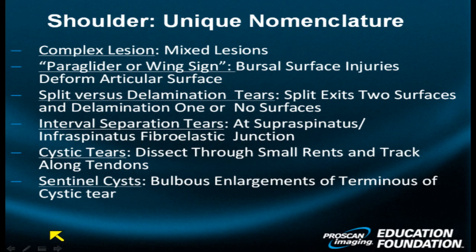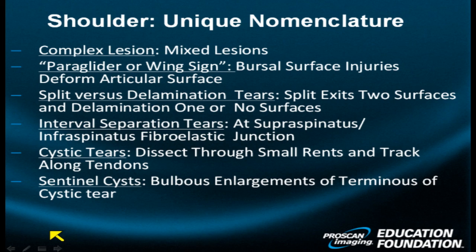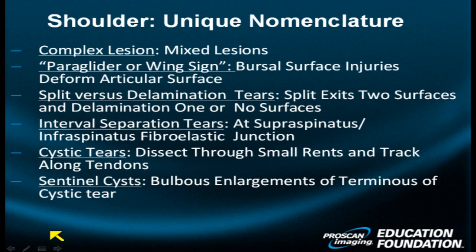Cystic tears — small, tiny holes or rents that allow the diffusion of synovial fluid tracking along major tendon bundles, creating an elongated proteinaceous water signal intensity mass that parallels the orientation of the tendon. And the sentinel cyst: a subtype of cystic tear in which the end of the cyst becomes more bulbous and looks like the tip of a thermometer.